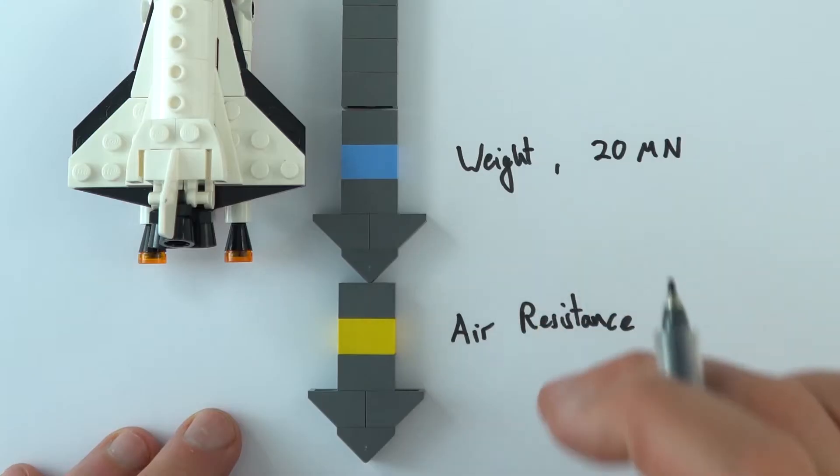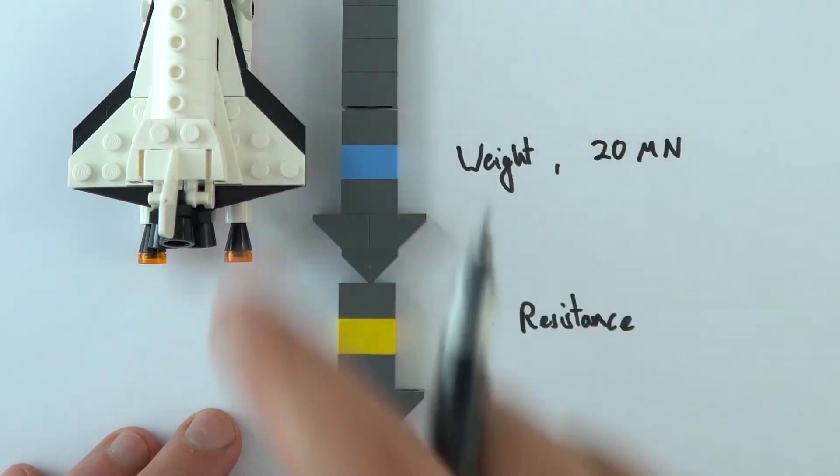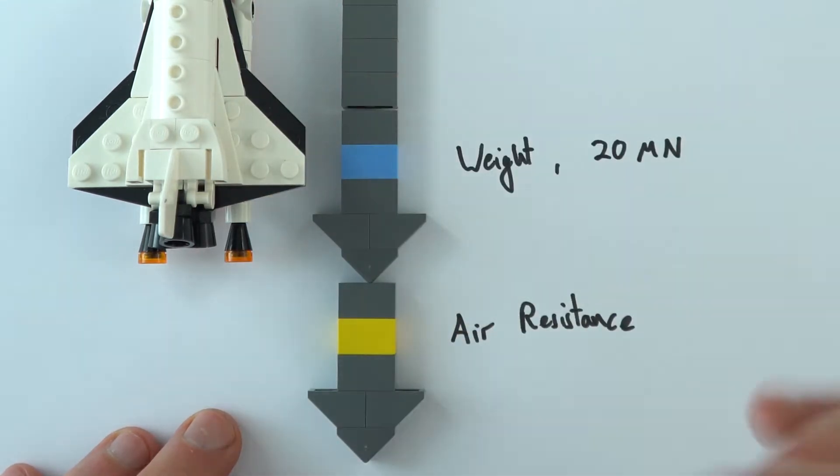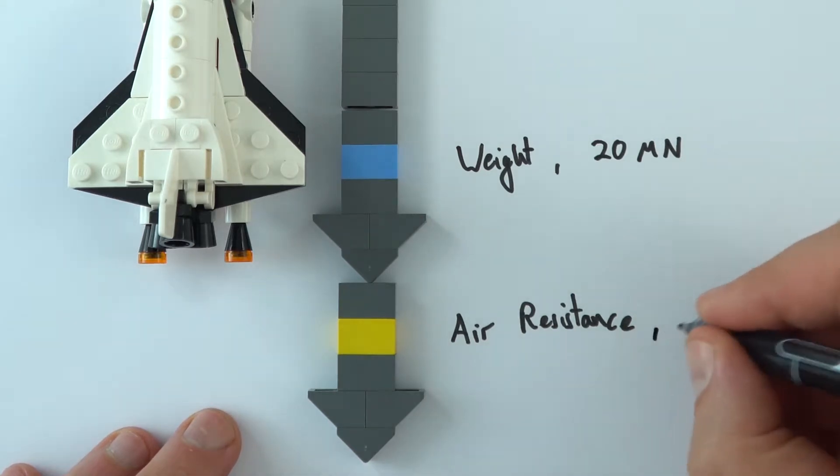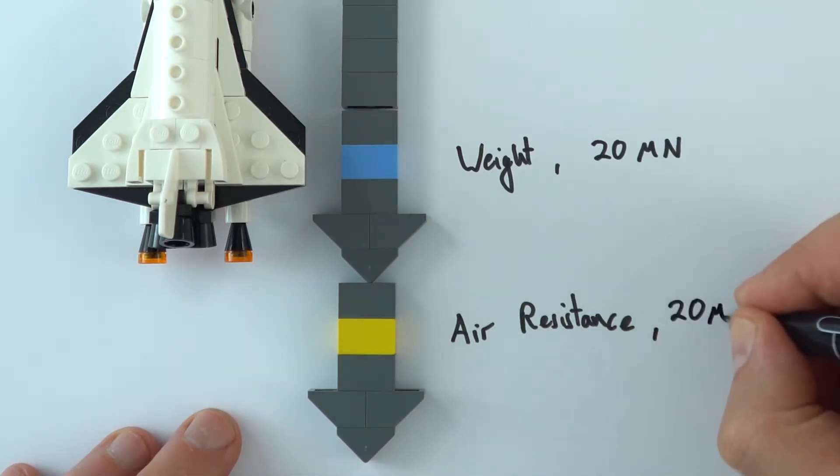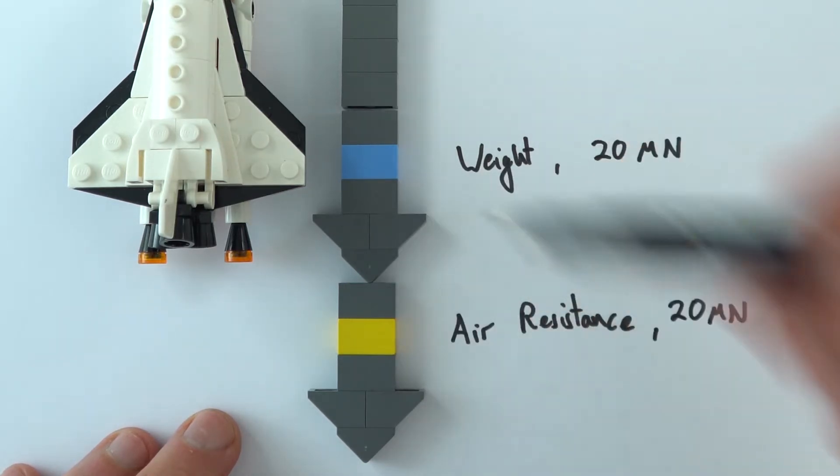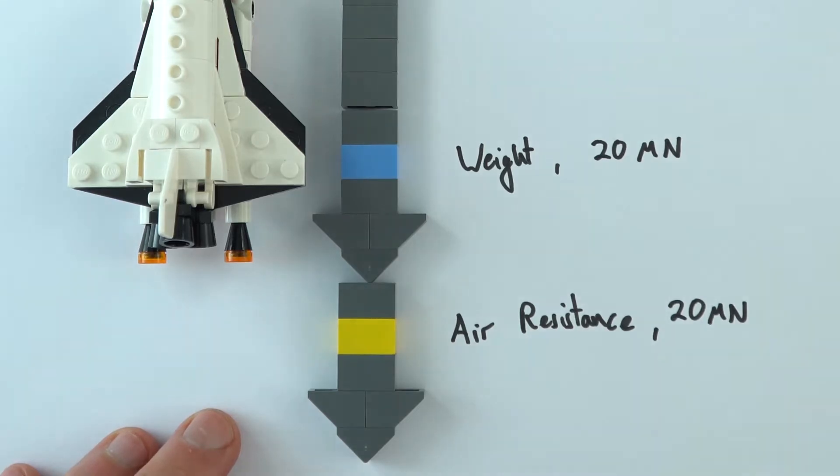Now, the air resistance would change. Actually, as this would get faster and faster, it collides with more particles per second. So the air resistance increases. But let's imagine at this time, the air resistance is equal to 20 mega newtons. And we can see because these are the same size force, I've got the same size arrow for both of these. And that's really important when it comes to representing forces.